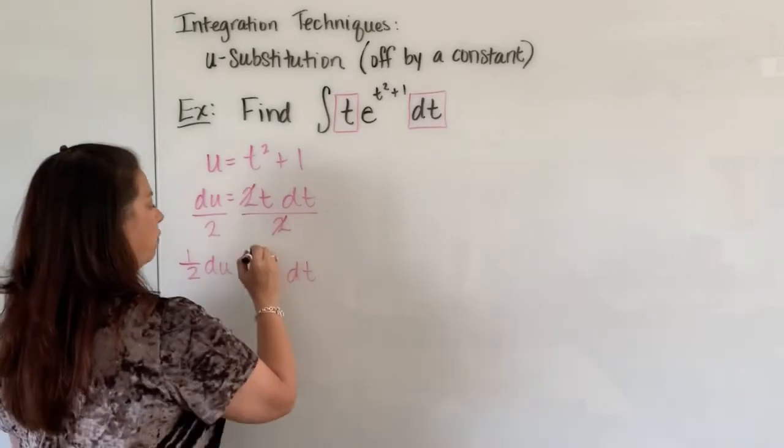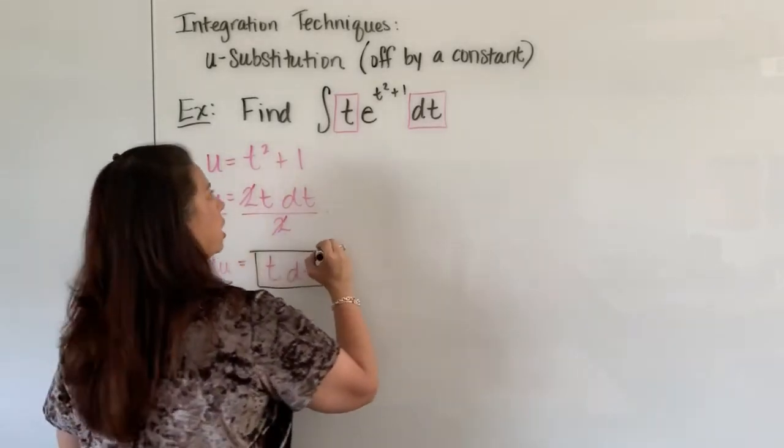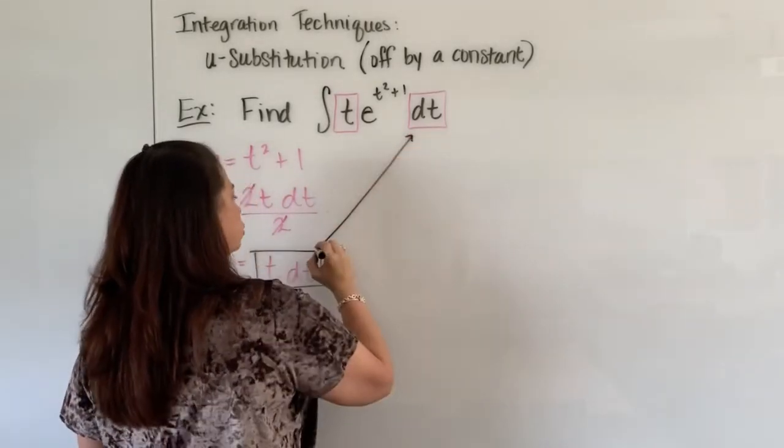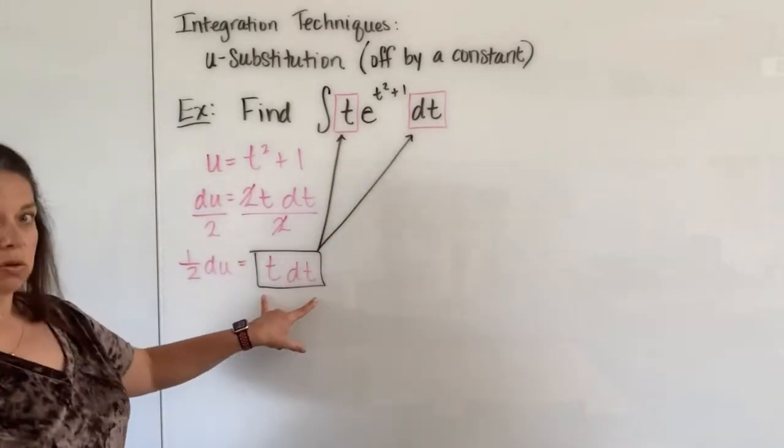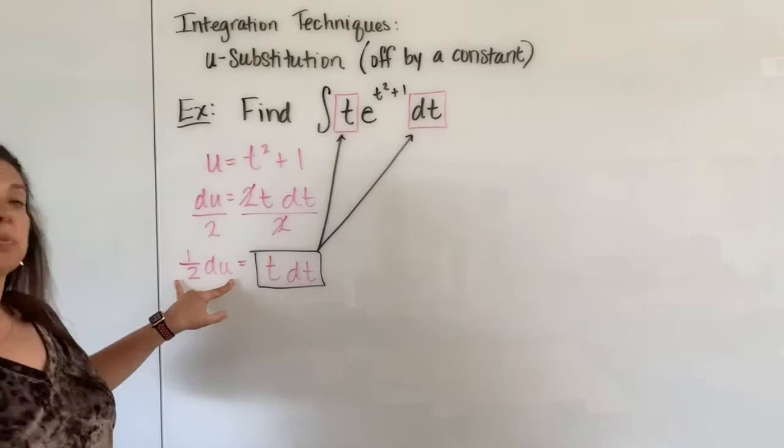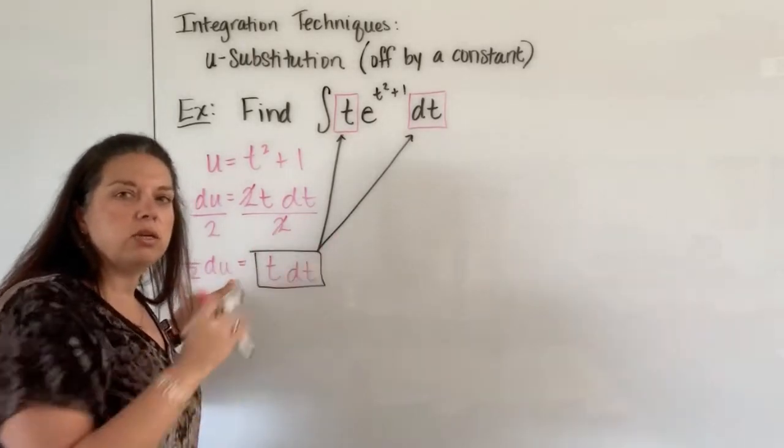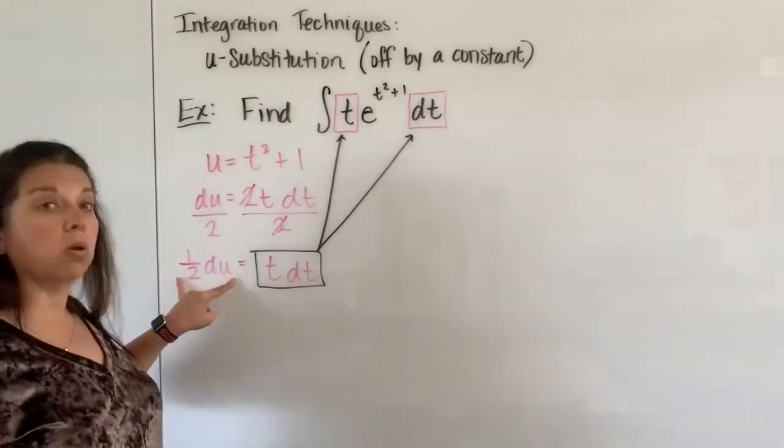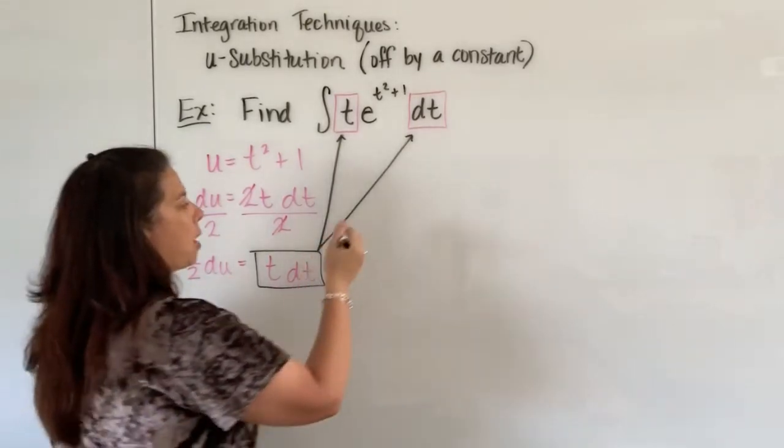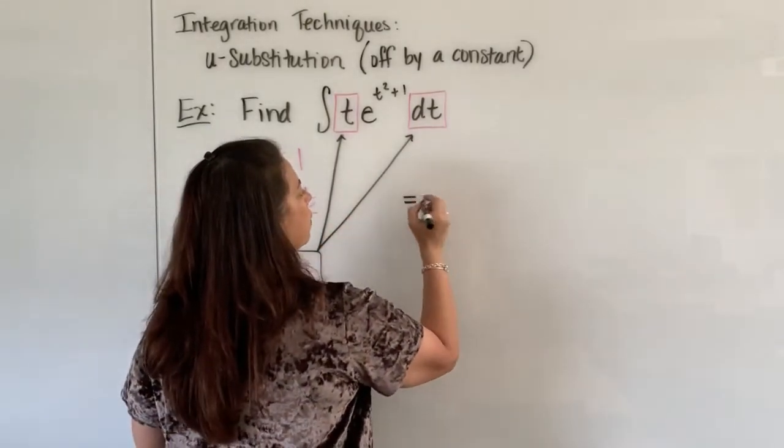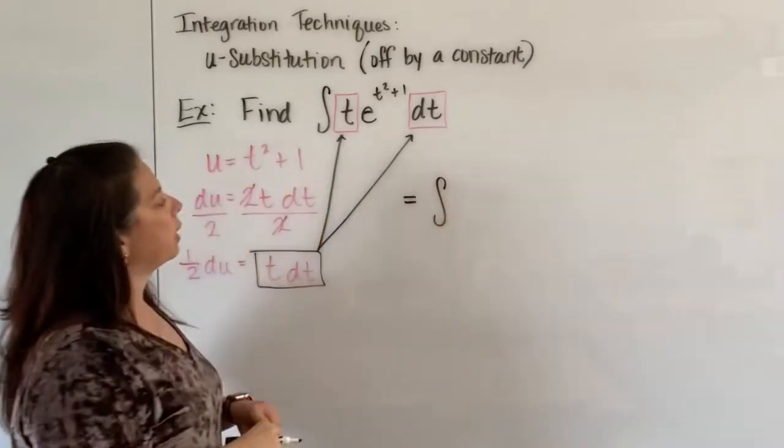So now I have an exact exchange here that I can exchange out the t and the dt. This whole expression here. But in its place instead of just a du that I'll put in, I'll put the whole 1 half du in its place. So go back up to the problem and we are going to rewrite our integrand here.